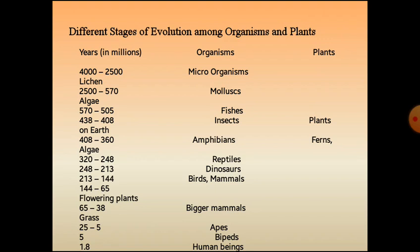From 320 to 248 million years, organisms like reptiles evolved, and from 248 to 213 million years, dinosaurs were there. That is nearly 2 million years past and nobody has seen dinosaurs — they were extinct.